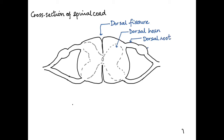The dorsal root shows a swelling which is called the dorsal root ganglion. Ganglia are aggregations of cytons. This dorsal root then extends and joins with the ventral root. Now let's label the ventral side.